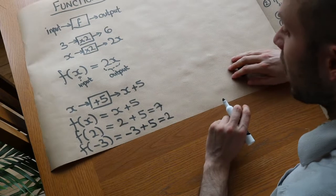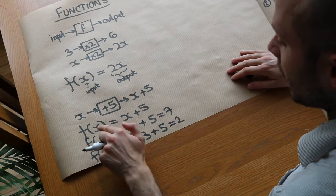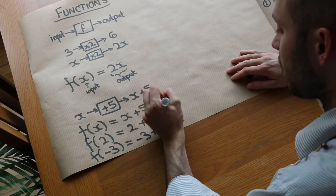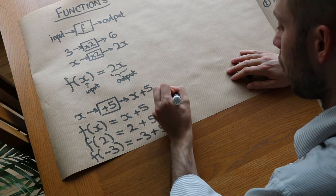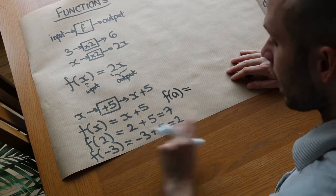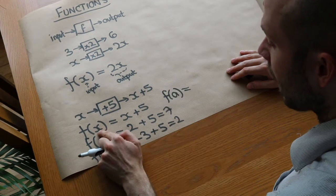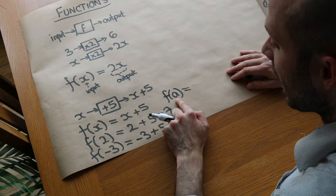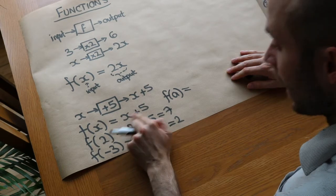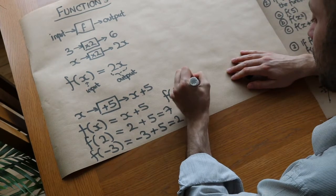But what we can also do is substitute in an algebraic expression. So if I want to do f of a, for example, then we substitute every instance of x for a instead. So it's going to be a plus five instead of x plus five.